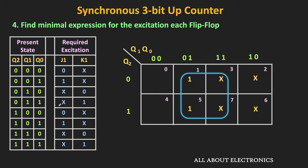Similarly, K1 is equal to 1 for two different input combinations — 011 and 111 — while four input combinations are don't-care terms. Mapping these in the K-map and using two don't-care terms, we again make a group of 4 that corresponds to Q0. So K1 = Q0 as well. That means J1 = K1 = Q0.